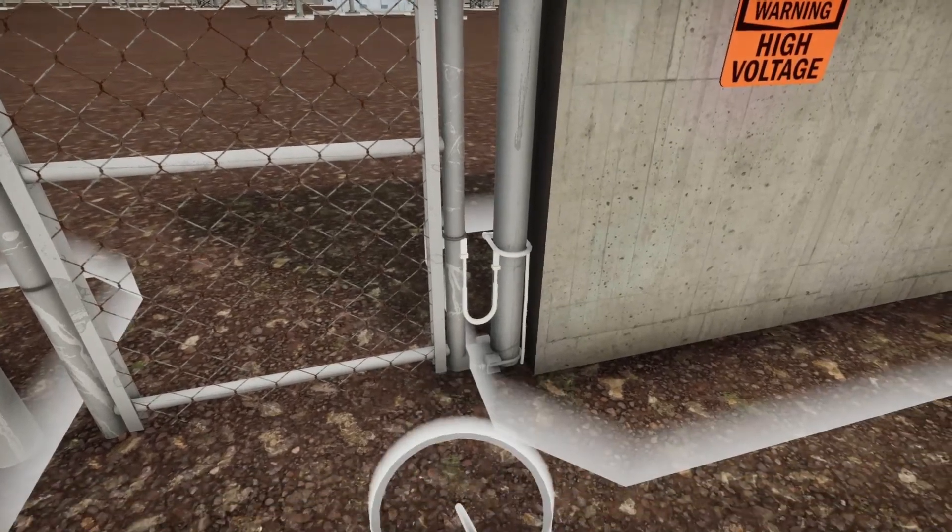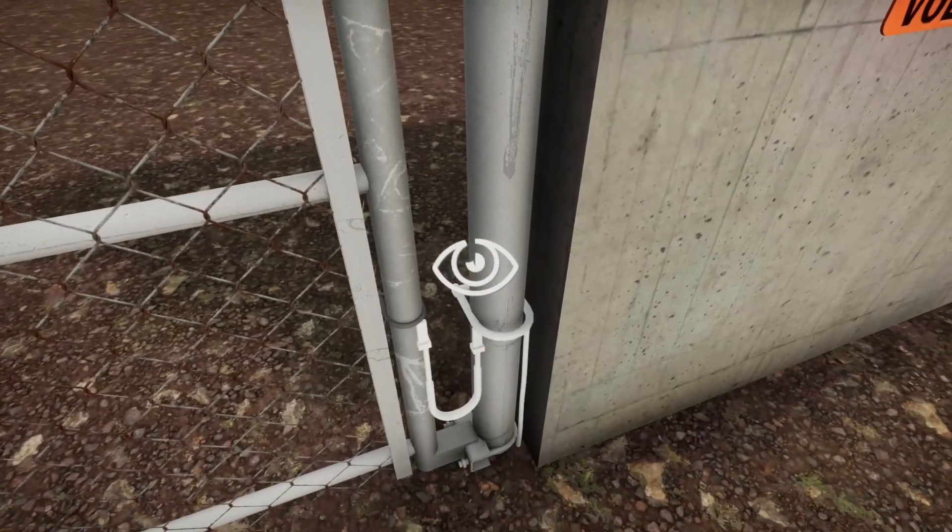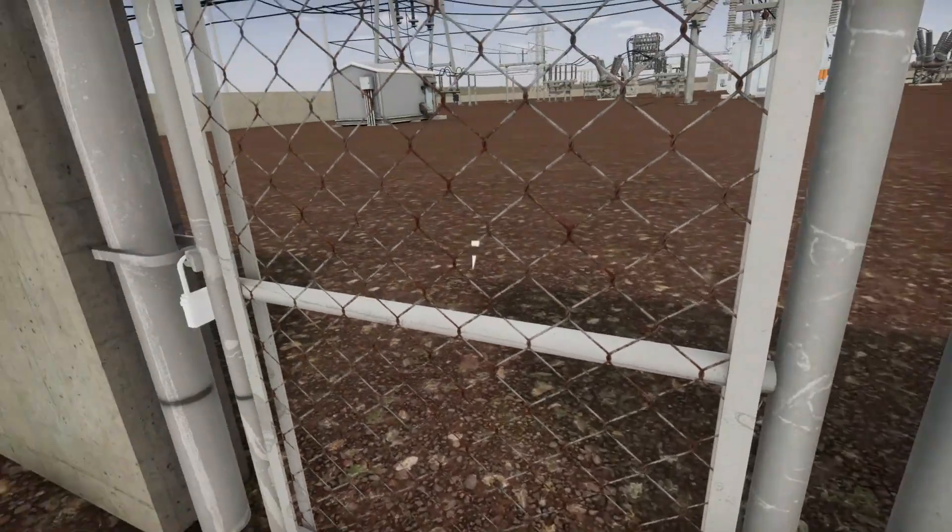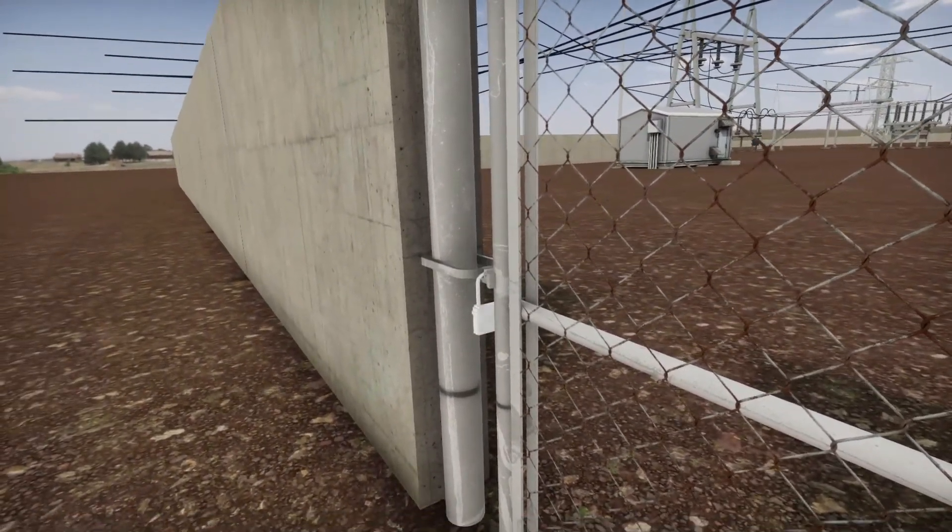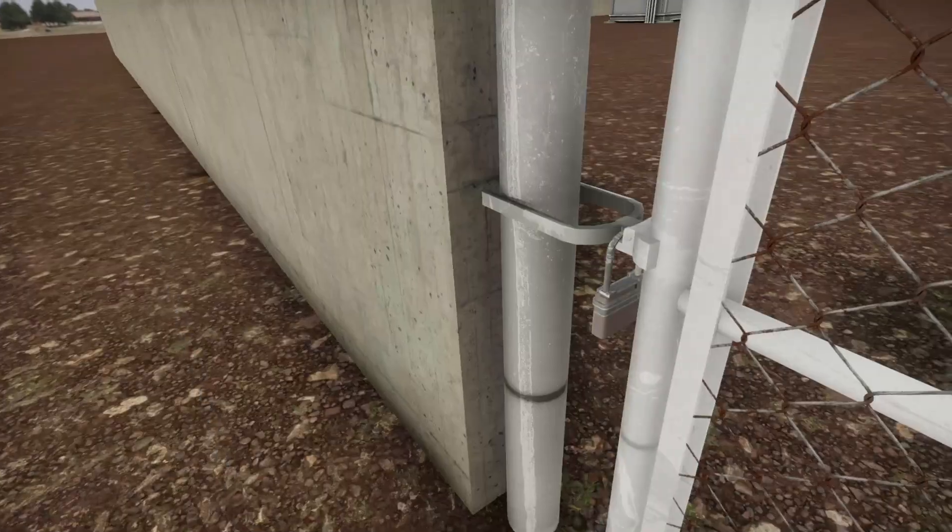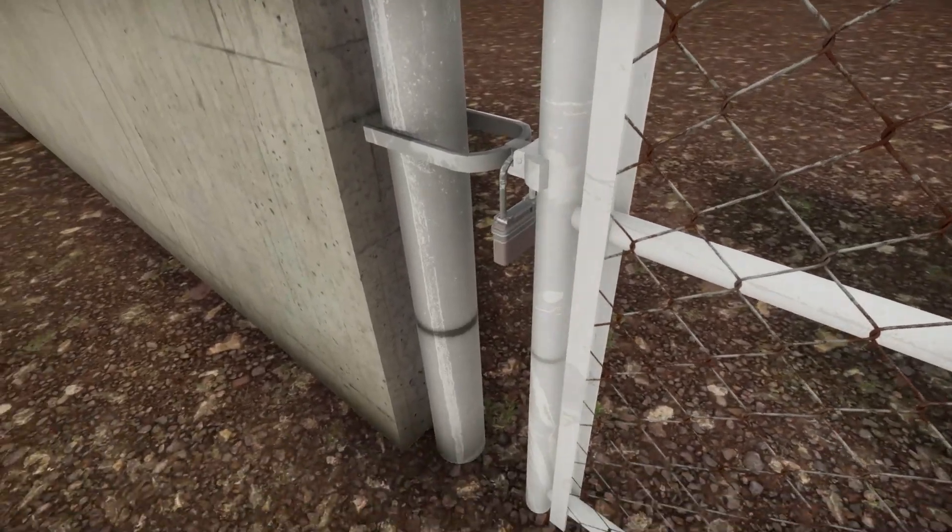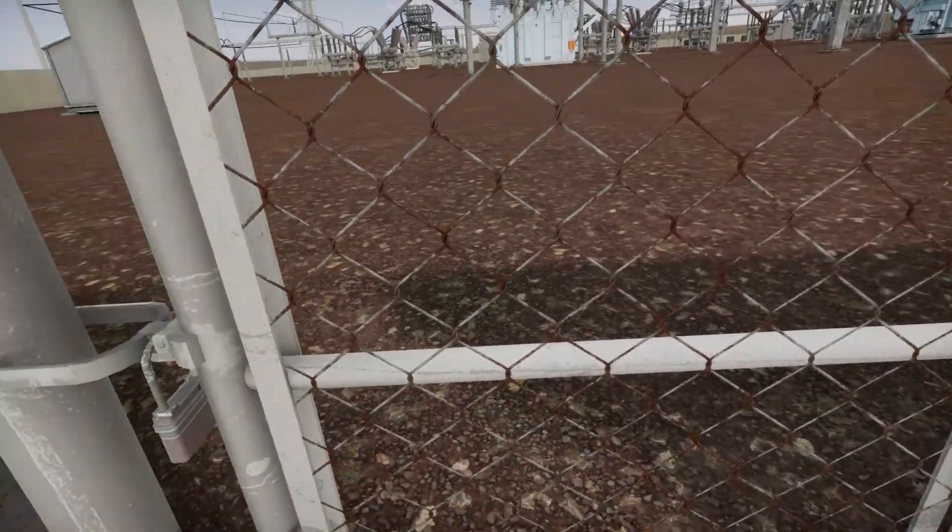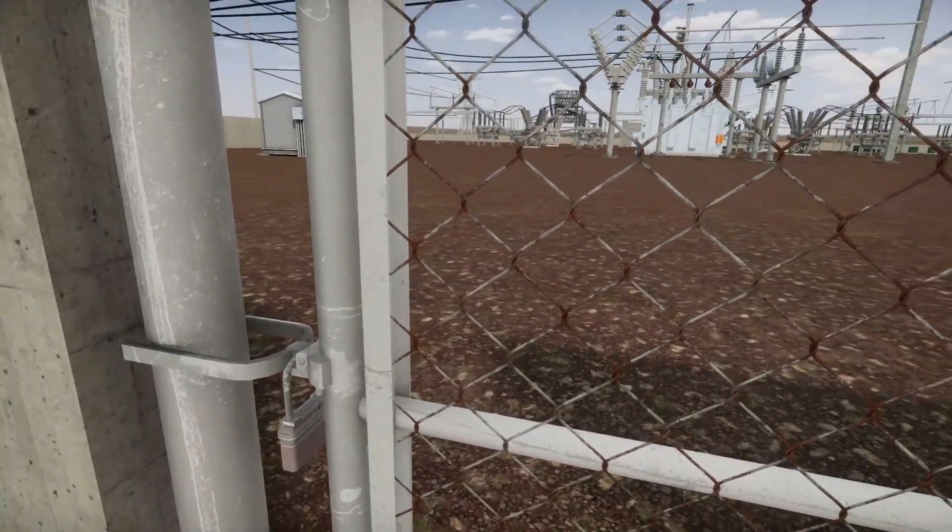Check that all grounding straps are secured. Check for unauthorized entry. Do not enter the substation if any signs of unauthorized entrance occurs, and immediately call the appropriate energy control center. Unlock and open the gate.